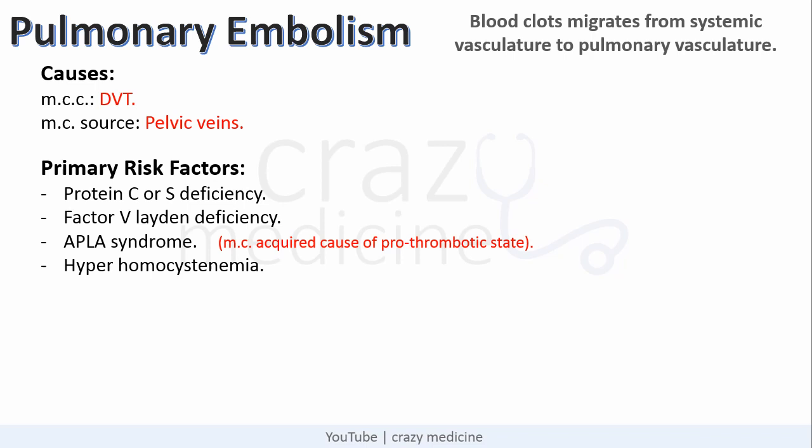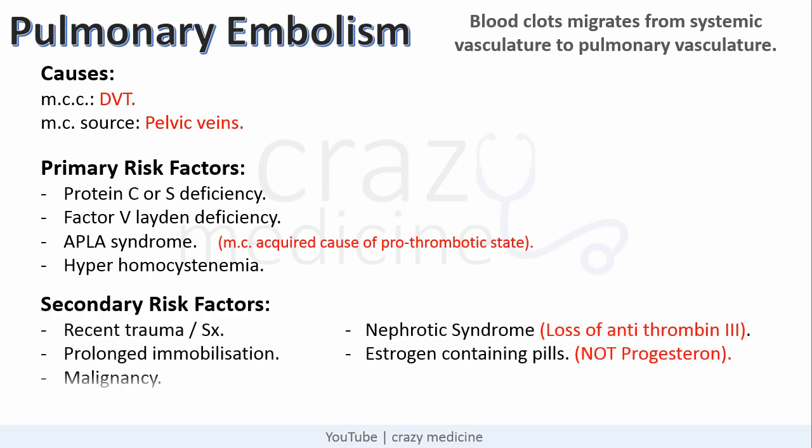Secondary risk factors include recent trauma or surgery, prolonged immobilization, malignancy, pregnancy, nephrotic syndrome — as it leads to loss of antithrombin 3 — and estrogen-containing pills.